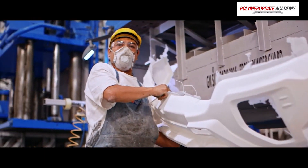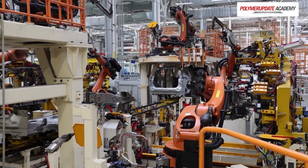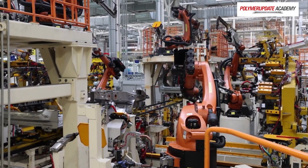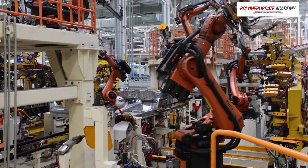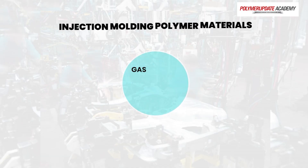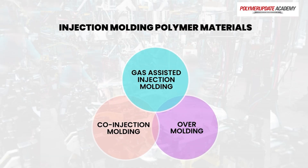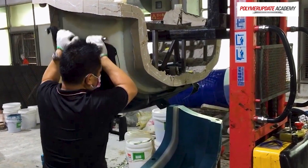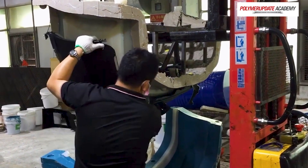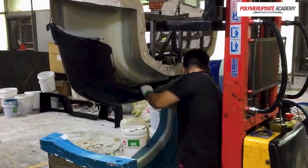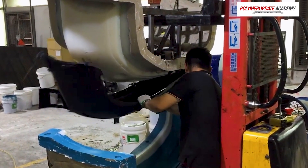Additionally, we'll discuss different injection molding techniques and their applications in the automotive industry. In the third session we'll cover advanced injection molding techniques for polymer materials including gas-assisted injection molding, co-injection molding, over-molding, etc. We'll explain the limitations of each technique and their applications in the automotive industry.